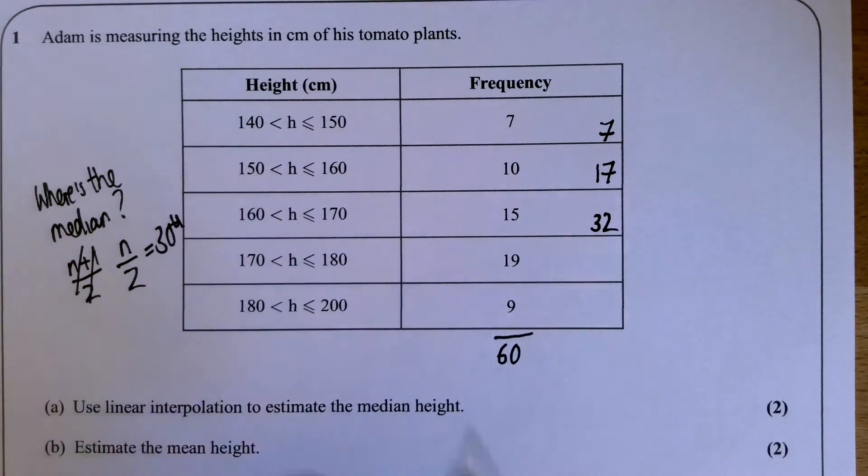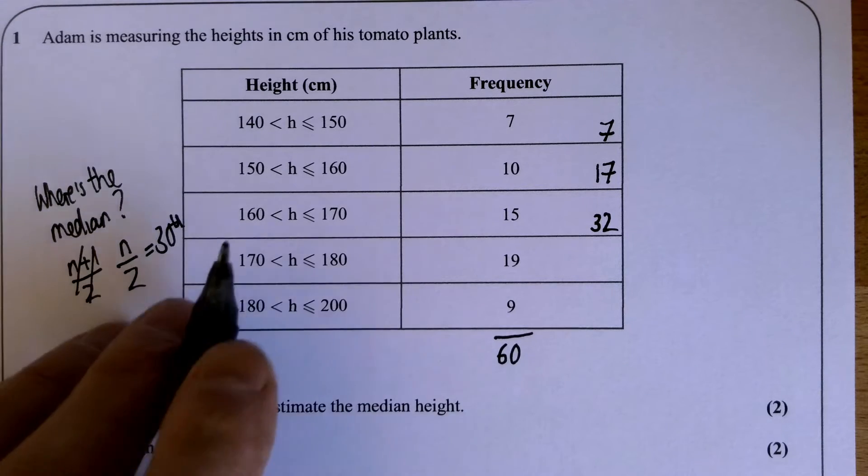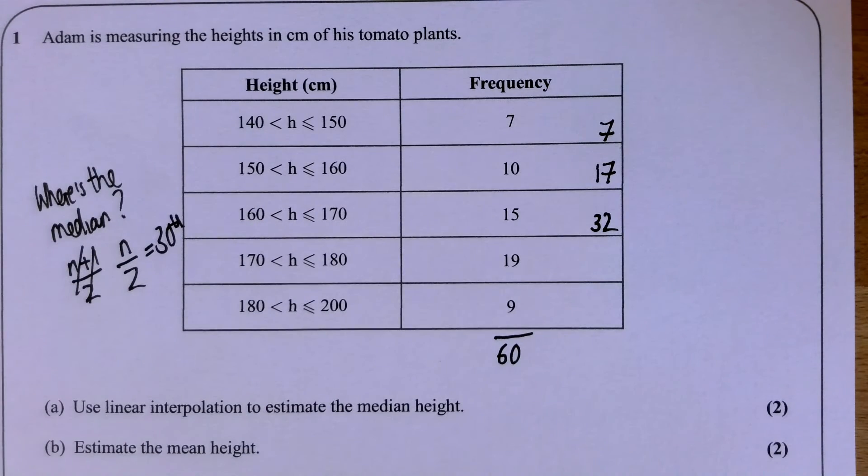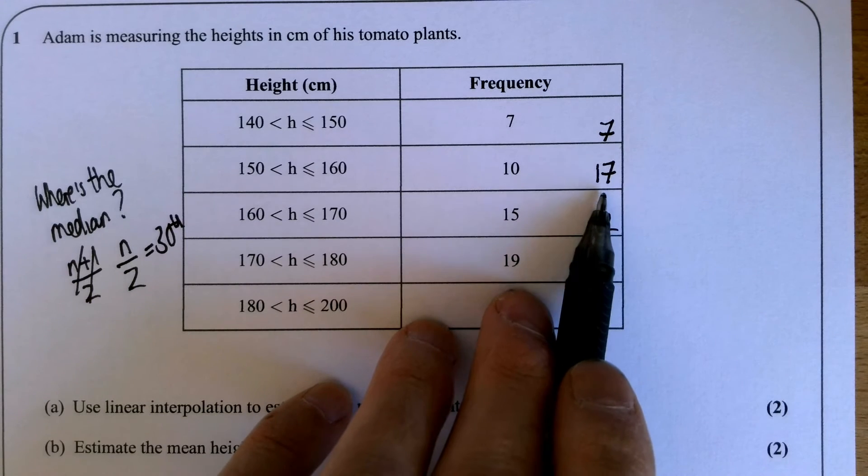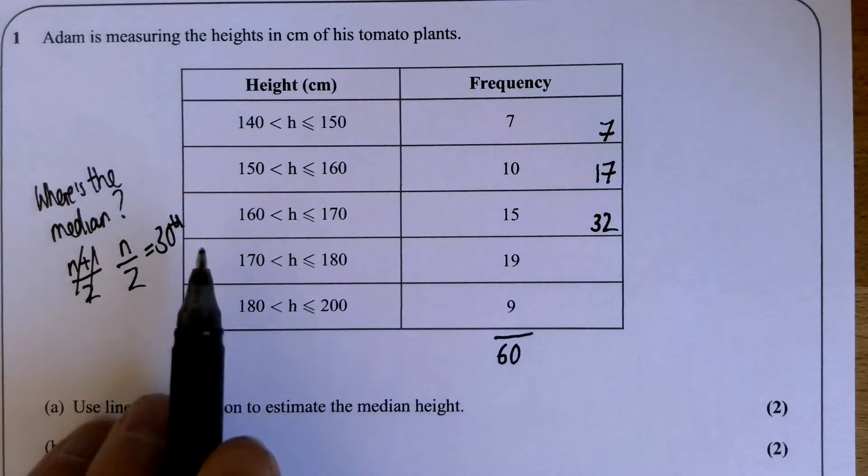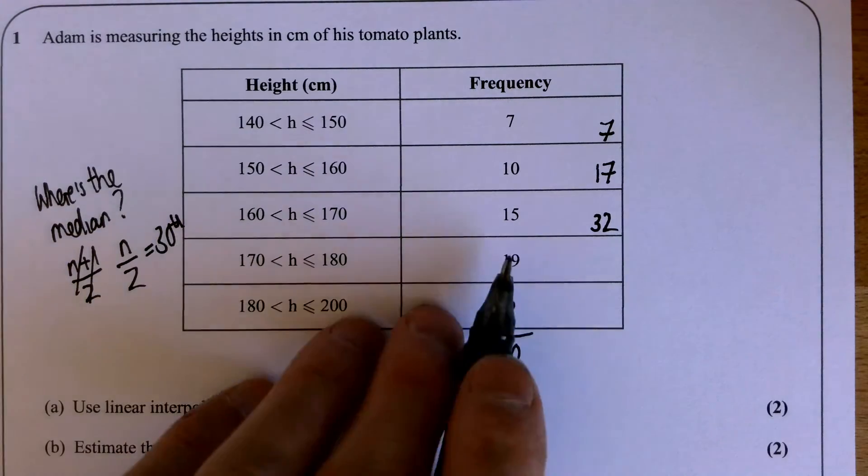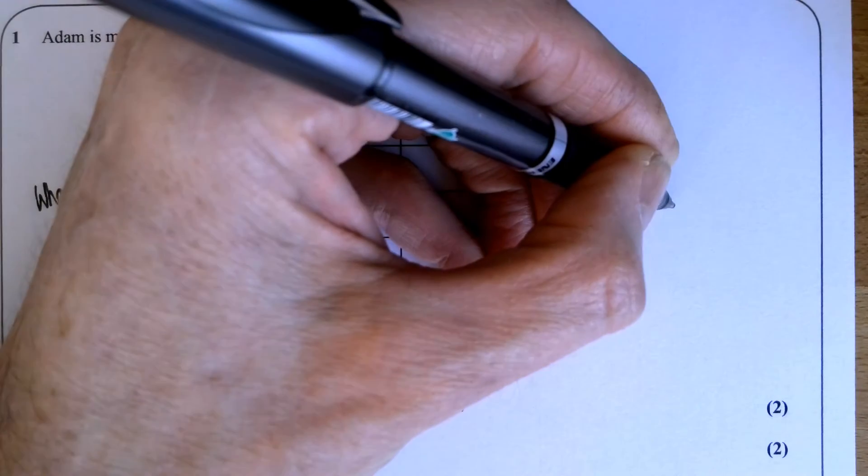And by the time I get to 170, I've counted 32 people. So my 30th person is somewhere in this group here. So I need to work out how far into that group that person is.